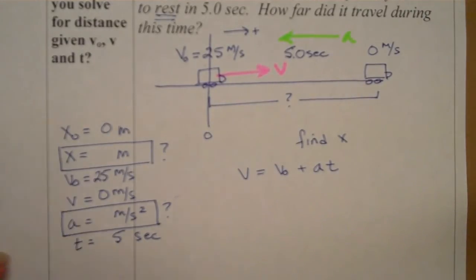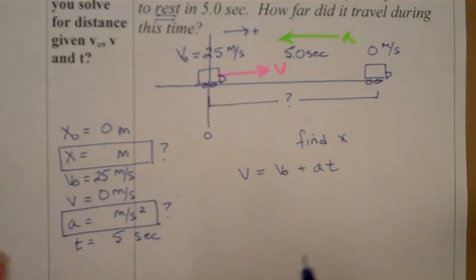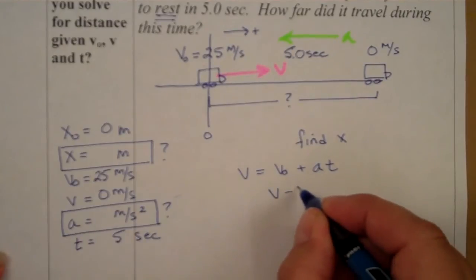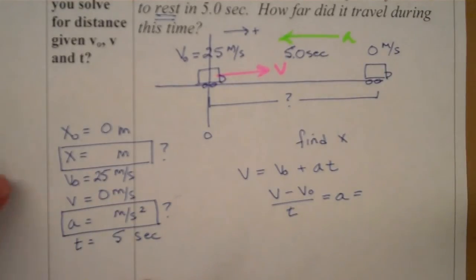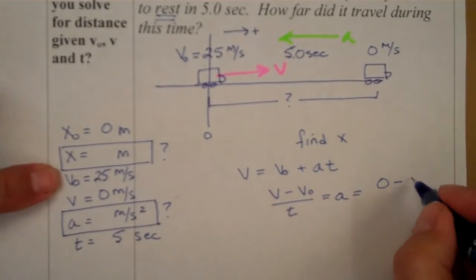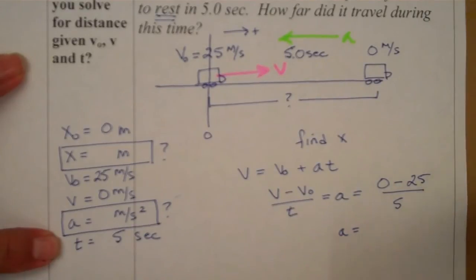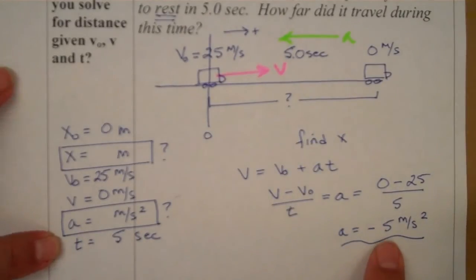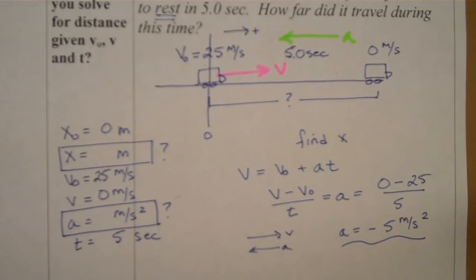We write down the equation and solve explicitly for acceleration: a = (v − v₀) / t. Plugging in our numbers: final velocity is 0, initial velocity was 25, and time was 5 seconds. So our acceleration is (0 − 25) / 5, which gives us negative 5 meters per second squared. That's what we were expecting — our motion was forward, we were slowing down, and acceleration was opposing us.